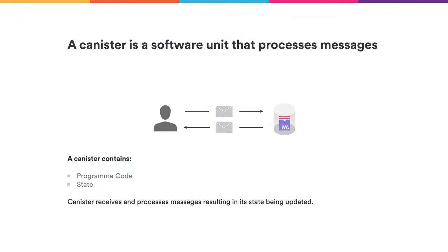So what is a canister? A canister is really a bunch of code — it contains program code and also the state of the program. When a user interacts with a canister, they send a message to one node of the Internet Computer, and the Internet Computer executes the canister on the input of that message and eventually computes an output message that the user can query back. By executing the message, the state of the canister is updated to reflect the latest changes.